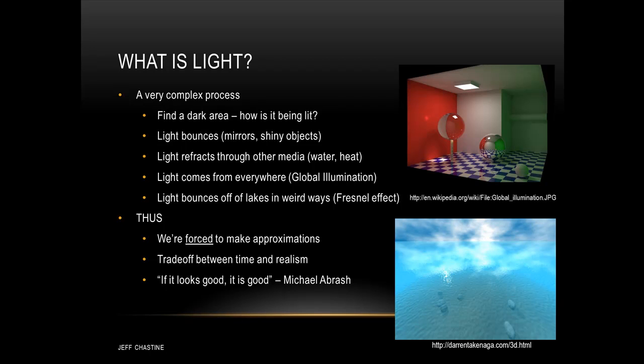Well as I said before, light has a lot of complex properties. For example, light reflects off of other objects, especially shiny ones like mirrors. It also refracts or changes its direction through other media like water and heat. So to answer that original question, light comes from everywhere, and we call this concept global illumination.